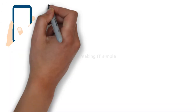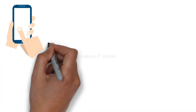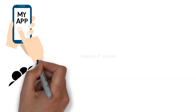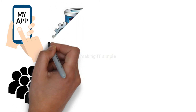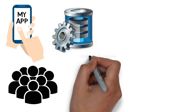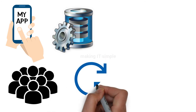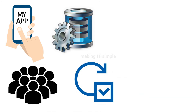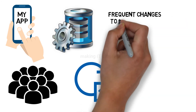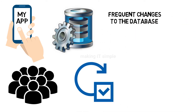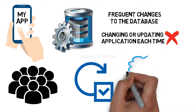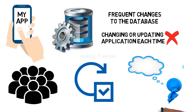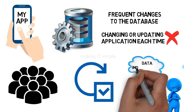Let's say you develop and launch an application. As the users grow, more data is generated, so you need to make changes to the database. Whenever you make changes to the database, will you change the application as well? There can be a situation where you will be required to make changes more frequently, but you can't keep on changing the application every time. We need to find a way through which we can make changes at the backend without modifying the application.